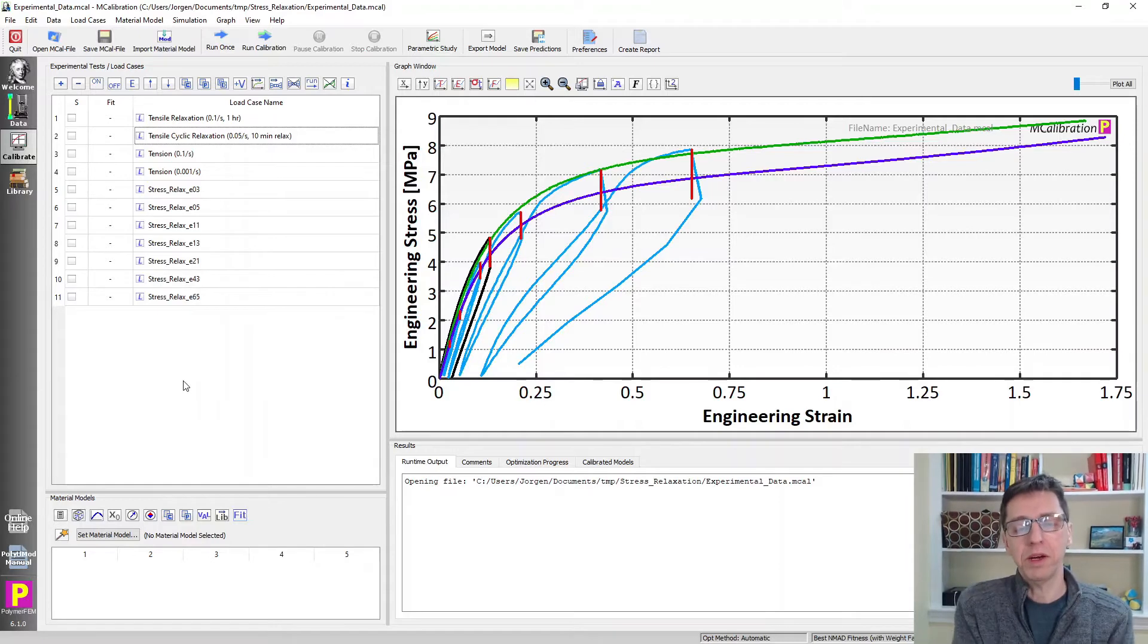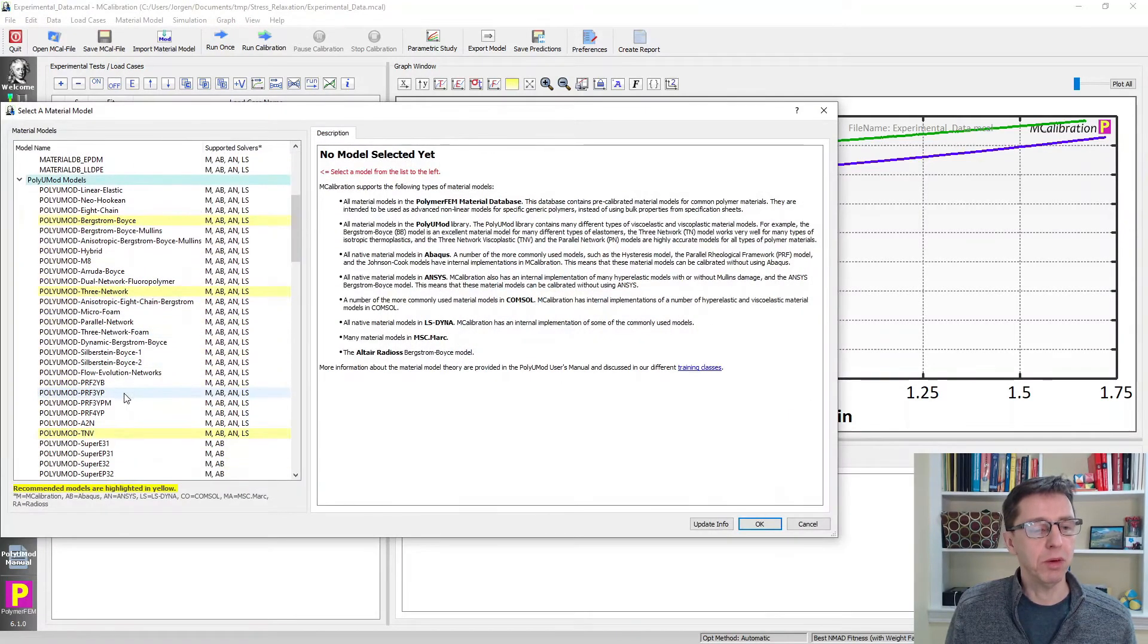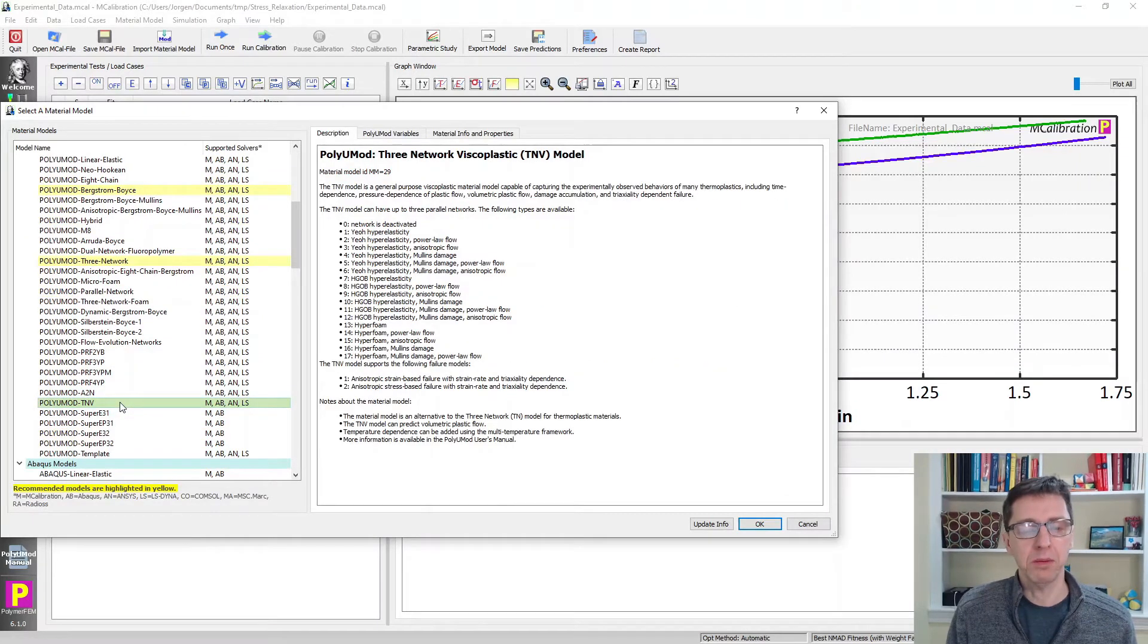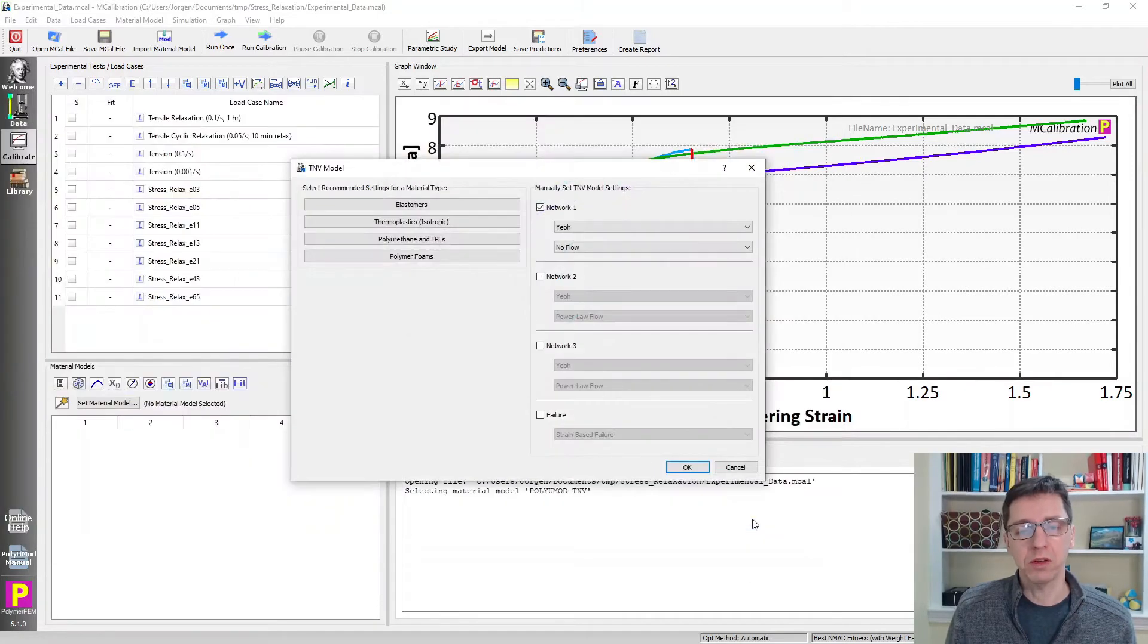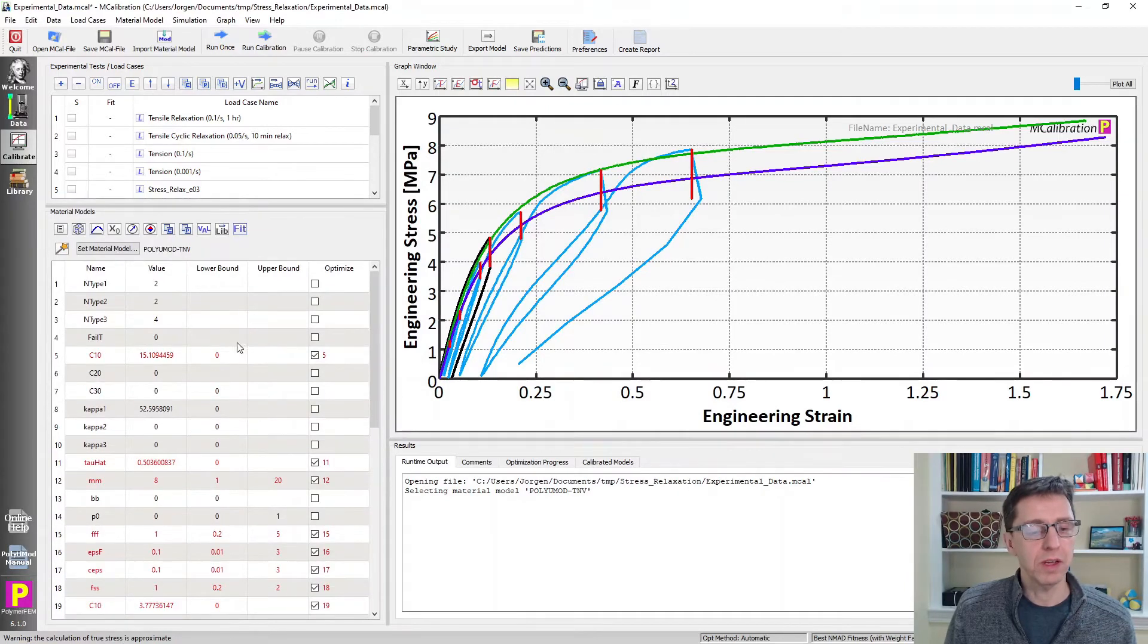So how do we decide what's better here? We need a material model. What kind of material model do we want to use for this example? The material model I will use is the PolyUMod TNV model. It's one of the better material models available right now. It has a feature that's really good for these kinds of thermoplastic elastomers, TPEs. Clicking on TPEs sets up a structure for this model that is really good for this material. That's the starting point for my calibration.